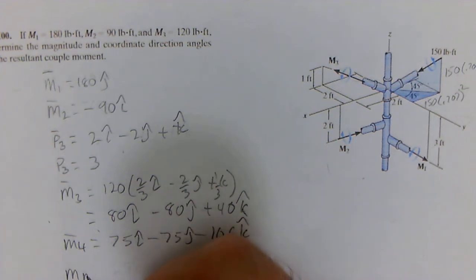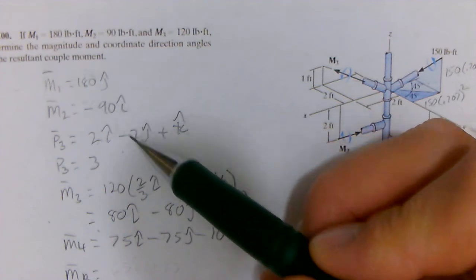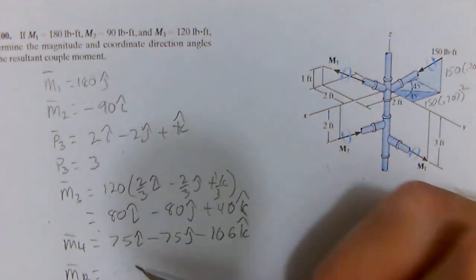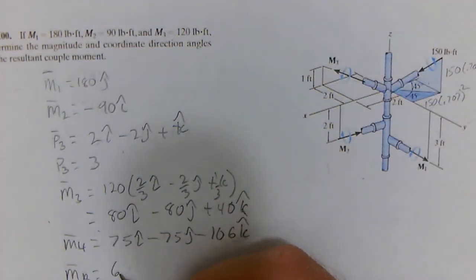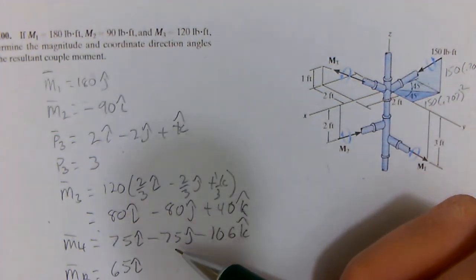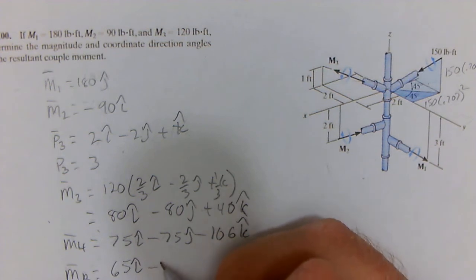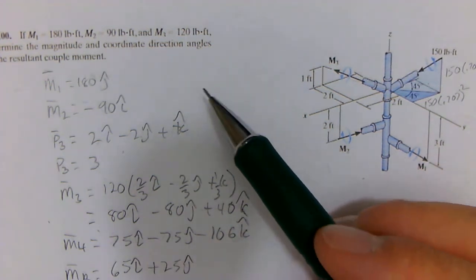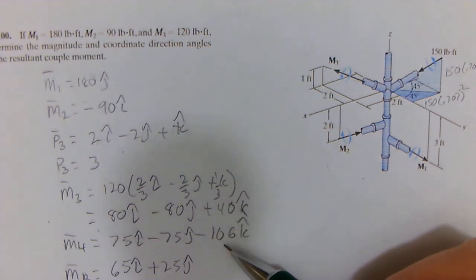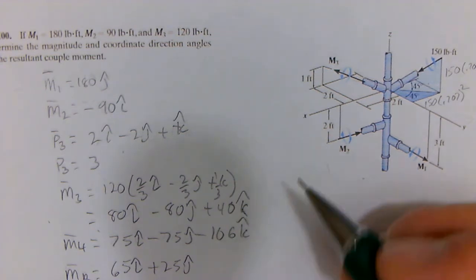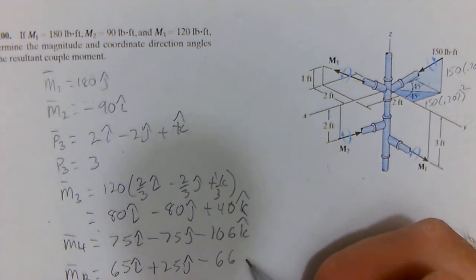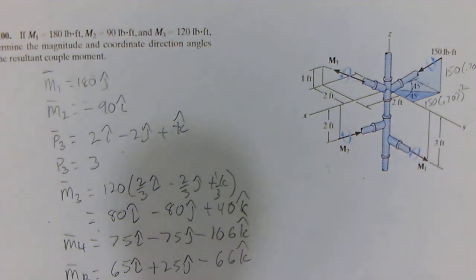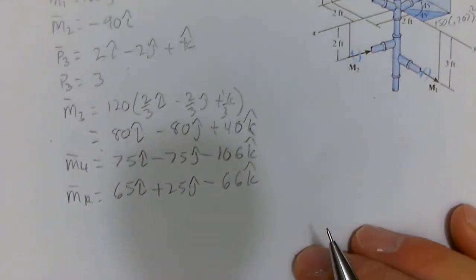Now the resultant is the summation of those. So in the i, we have negative 90, positive 80, positive 75, which is 65 in the i. 180 minus 80 is 100, minus 75 is 25 in the j. And then we have 40 and 106, which adds to negative 66 in the k. And there we have the resultant vector.